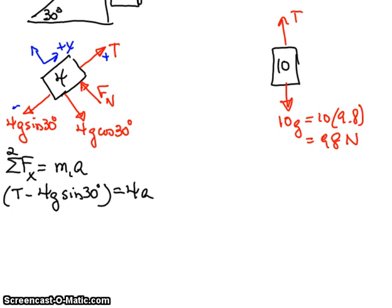Let's carry this out a little further. This is going to be T minus 4 times 9.8 times the sine of 30 is a half. So we'll write that in there like that, equals 4a.